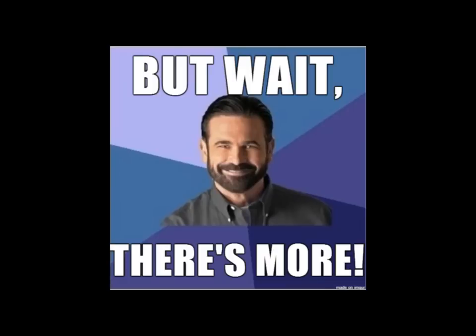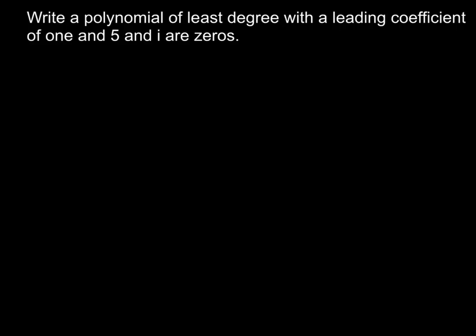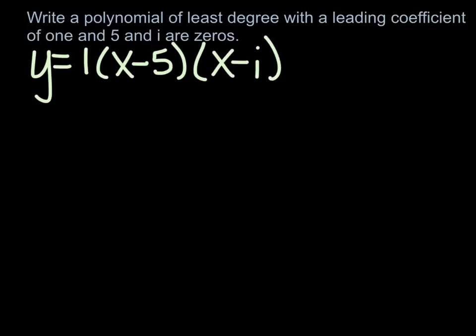But wait! There's more! Just one more example. Write a polynomial of least degree with a leading coefficient of 1, so once again we don't have to worry about a, and 5 and i are zeros. So, we will write y equals a is 1, 5 is a zero, x minus 5, i is a zero, x minus i, but wait a minute! If i is a zero, then the conjugate, which is going to be negative i, has to be a zero as well. So the factor would be x plus i.